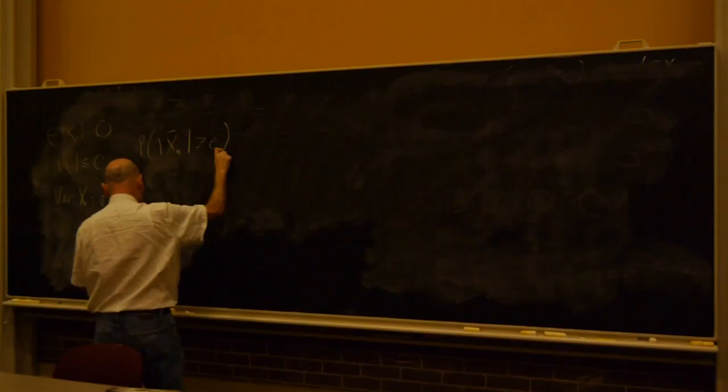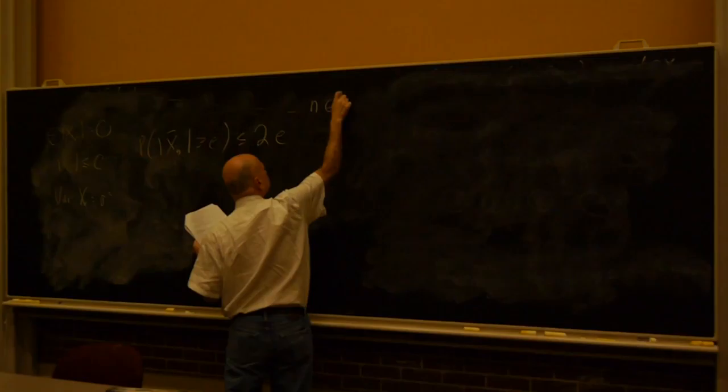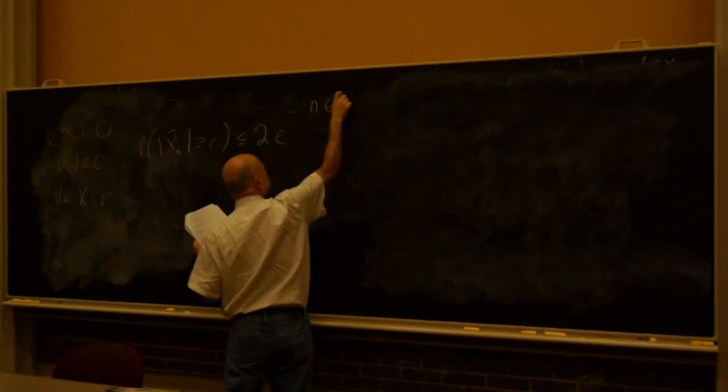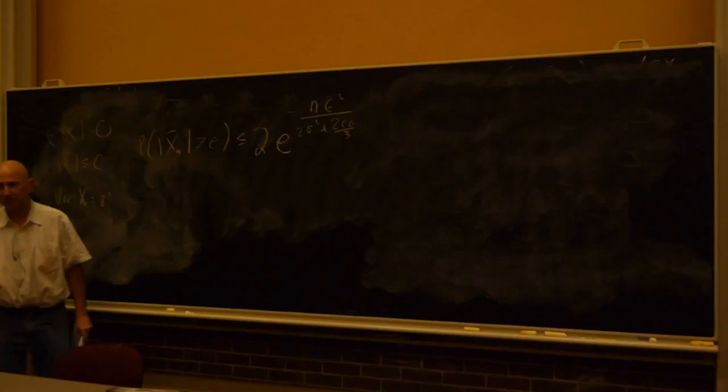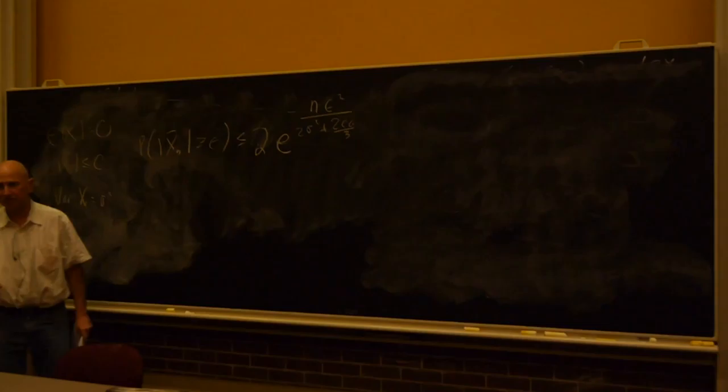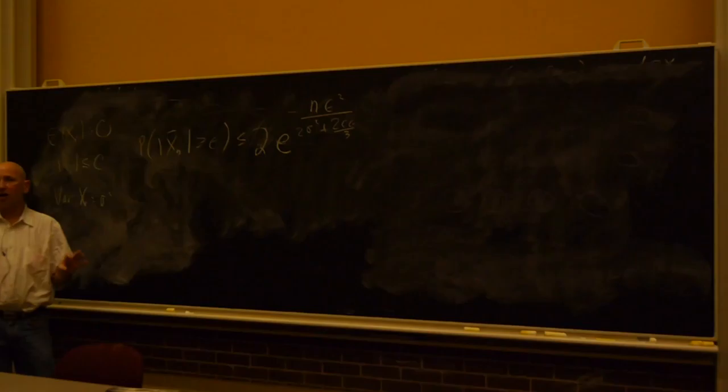So it looks just like Hoeffding's inequality. The probability that x-bar is bigger than epsilon — if the mean is mu, it'll just be x-bar minus mu. The probability that's bigger than epsilon is less than 2e to the minus epsilon squared. Looks a lot like Hoeffding's inequality.